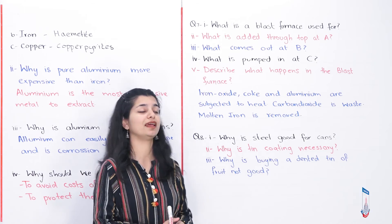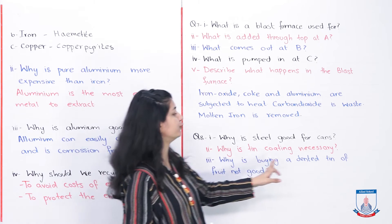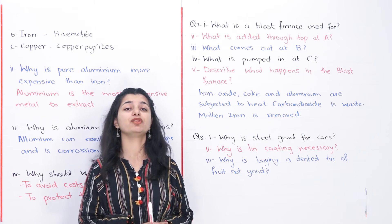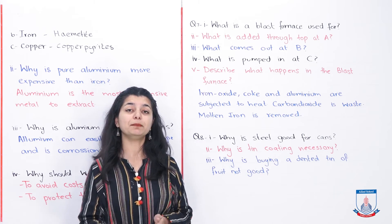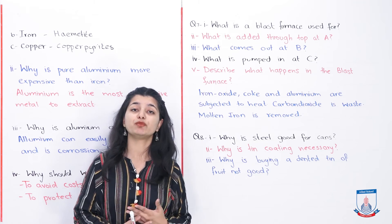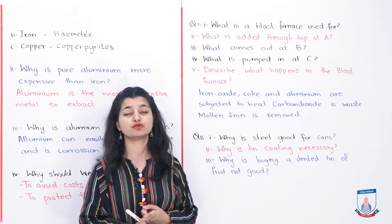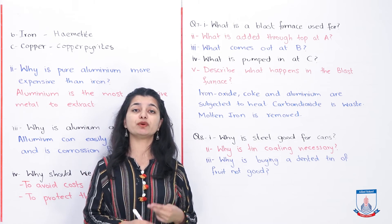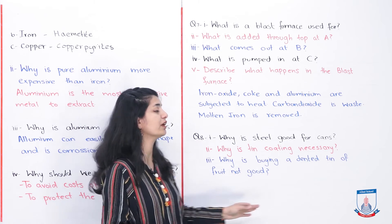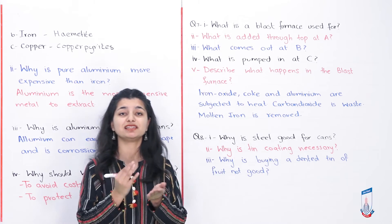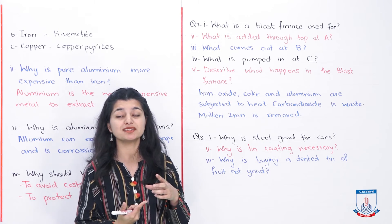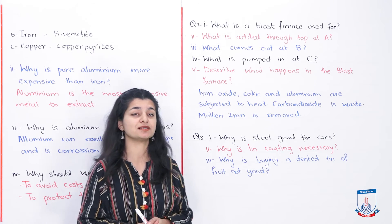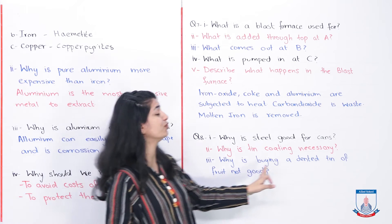Question number 8 asks: why is steel good for cans used for food and drinks? Aluminum is also used for this, but steel is good for the same reasons: it can change its shape and is relatively corrosion-free since corrosion is not fast. Because steel can bend and be formed into a can shape, it is used for the manufacture of cans.